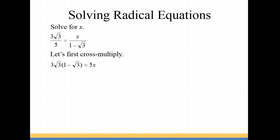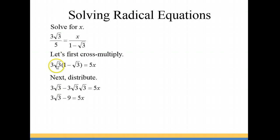So we're multiplying 3√3 times (1 minus √3) equal to 5x. Notice that I put the binomial (1 minus √3) in parentheses — that's to remind me to distribute the 3√3. So you're going to take 3√3 times 1, and 3√3 times √3, which is negative, giving minus 3√3 · √3.